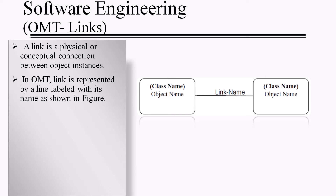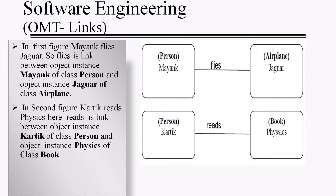Now we will discuss links and associations. A link is a physical or conceptual connection between object instances. In OMT, a link is represented by a line labelled with its name. For example, Mayank flies Jaguar — here 'flies' is a link between object instance Mayank of class Person and object instance Jaguar of class Airplane. In the second example, Karthik reads Physics — 'reads' is a link between object instance Karthik of class Person and object instance Physics of class Book.